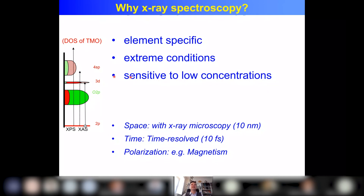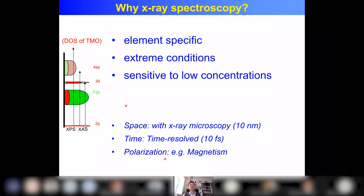I will not give an example of that today, but if you're interested you can ask me. What I will not discuss today: I will not do anything with microscopy, no spatial resolution. Also I will not discuss time-resolved measurements. X-ray microscopes go down to 10 nanometers; time-resolved measurements go down to 10 femtoseconds. And I will not discuss polarization much — if you're interested in magnetic materials you can use circularly or linearly polarized x-rays.